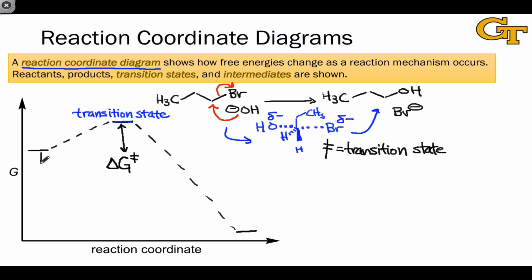The overall free energy change of the reaction is represented as the difference between reactant and product energies, and we've seen this already. It's delta G naught.